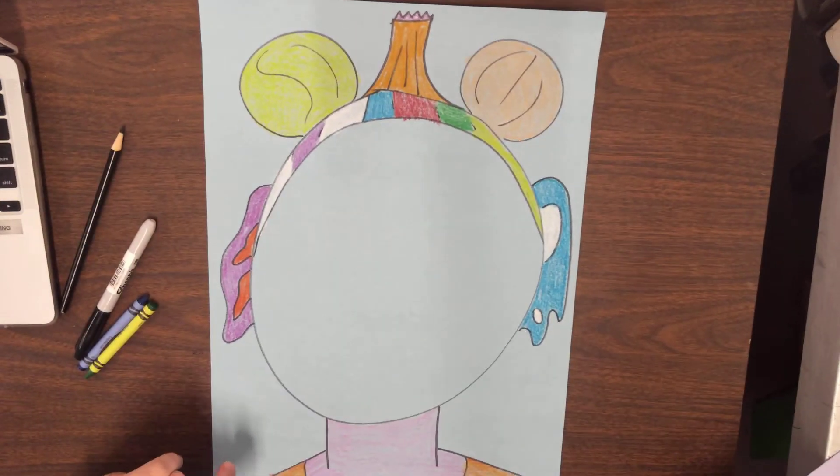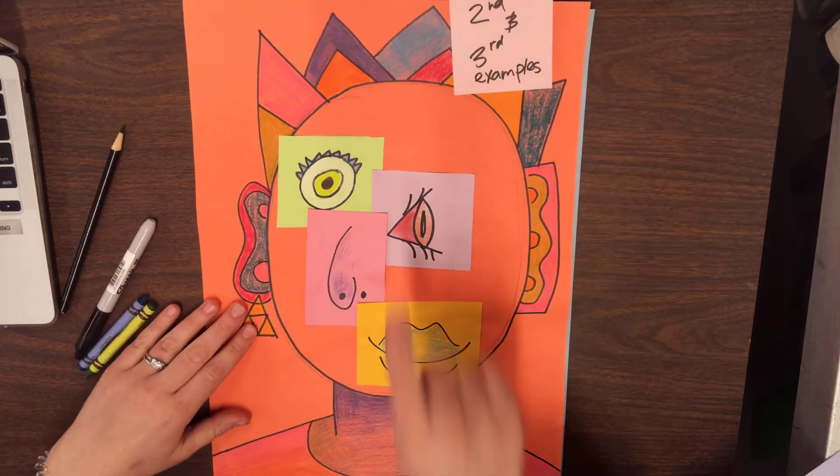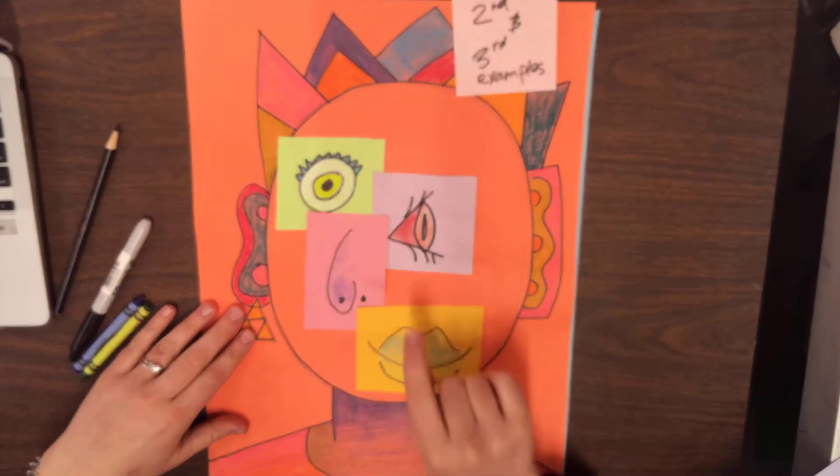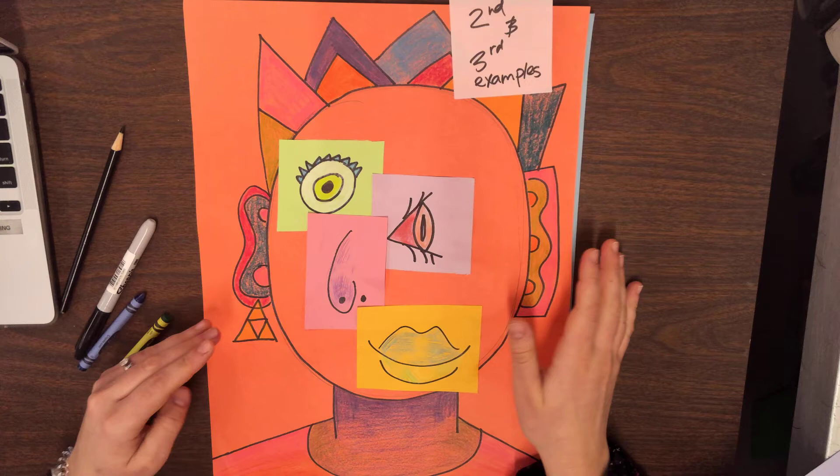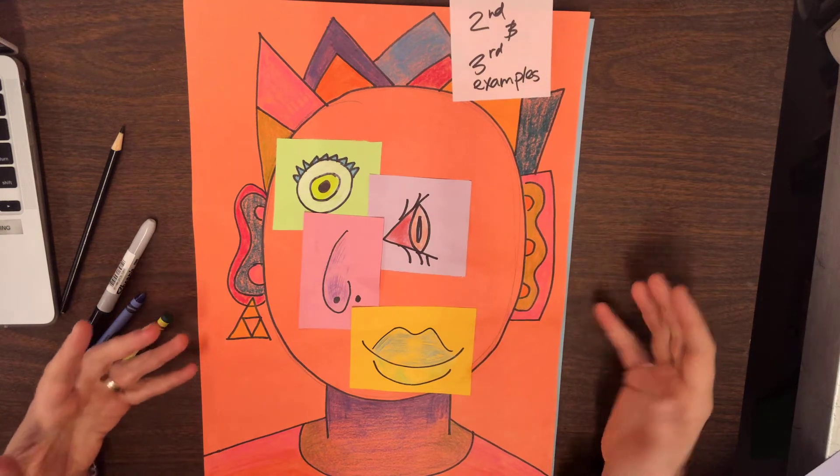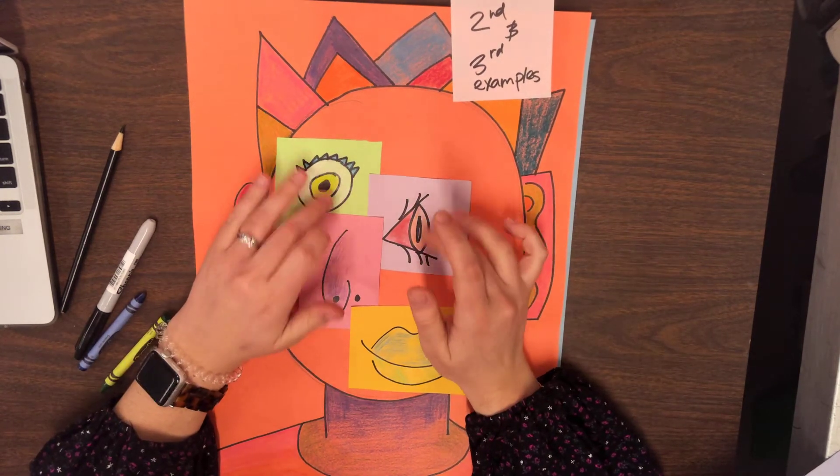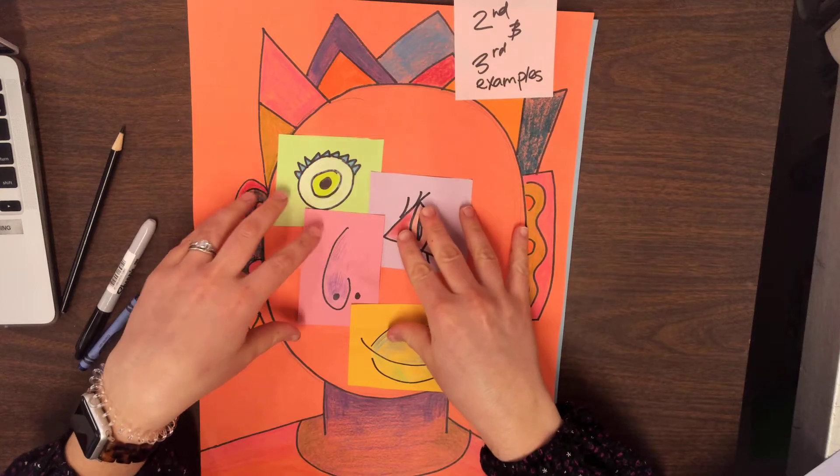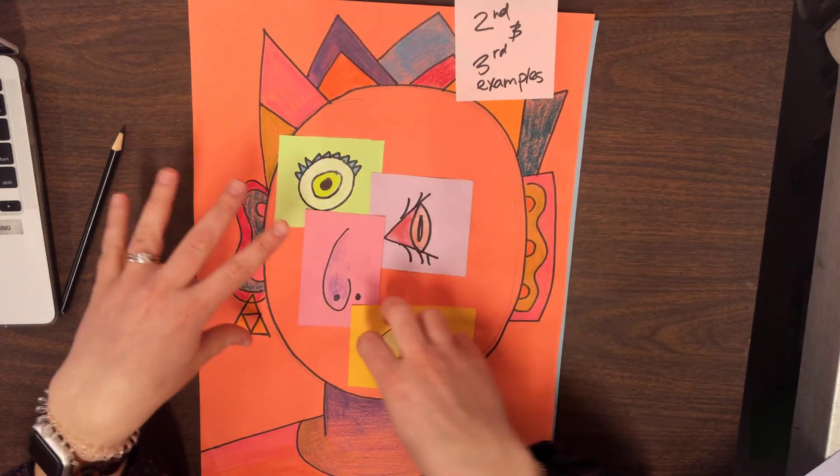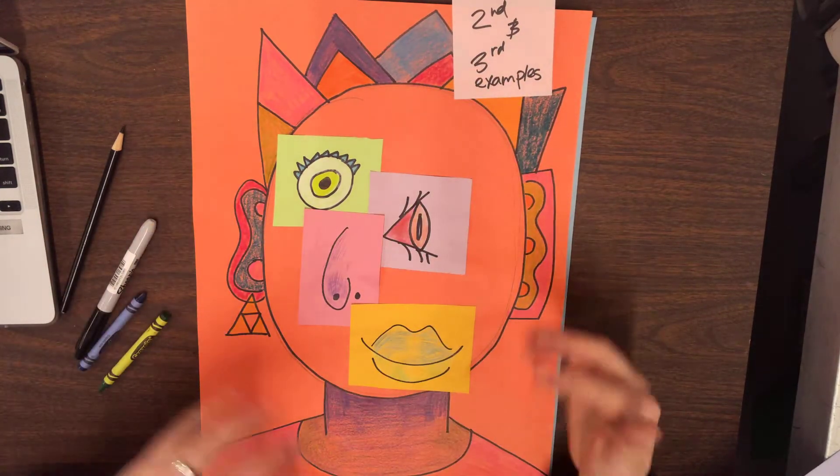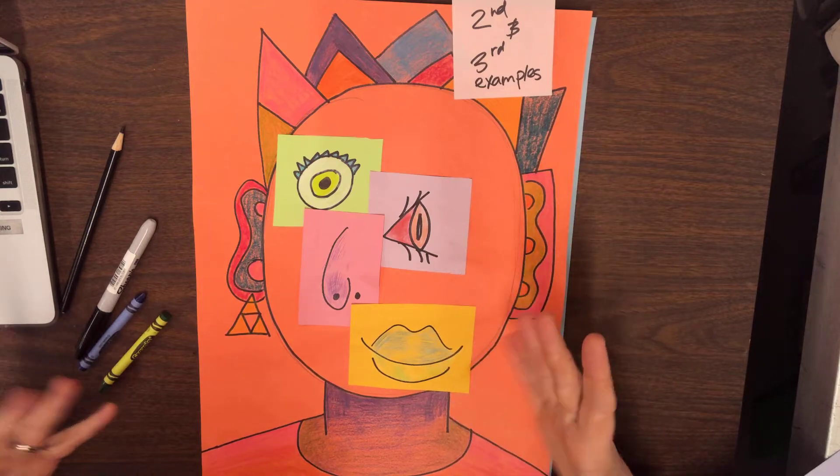This week we are going to finish it by adding eyes, nose, and mouth. You have the option to do whatever you would like for the eyes, nose, mouth, and you could have them in weird spots. Like if you wanted, you could put your mouth on your forehead. This is Picasso—he did some crazy stuff.